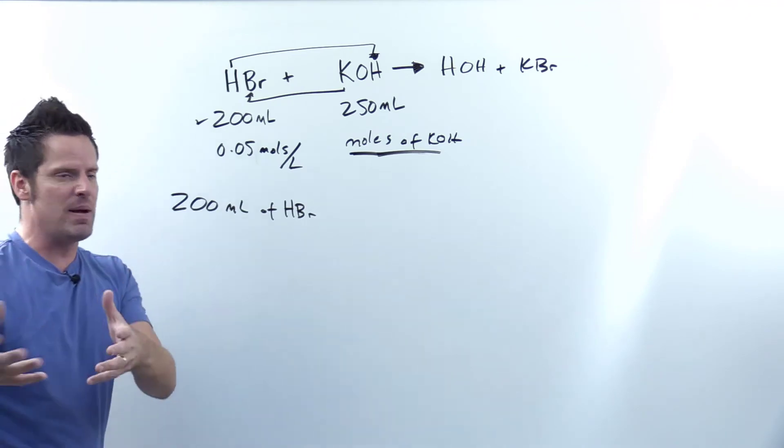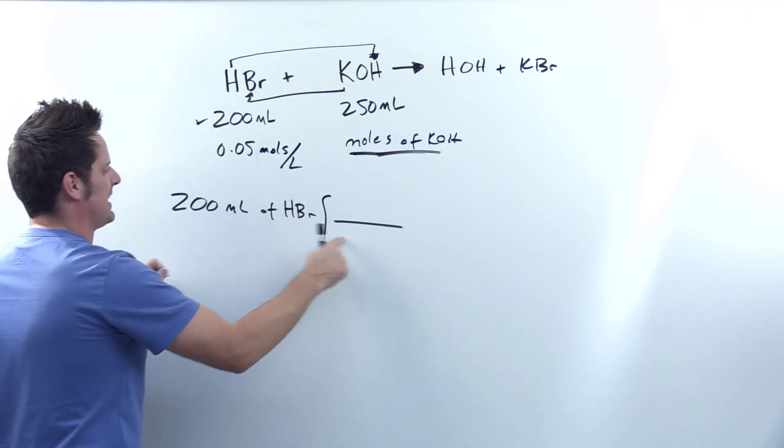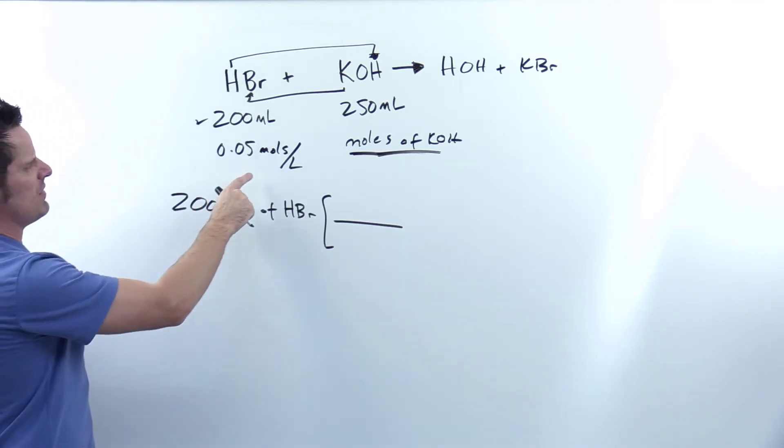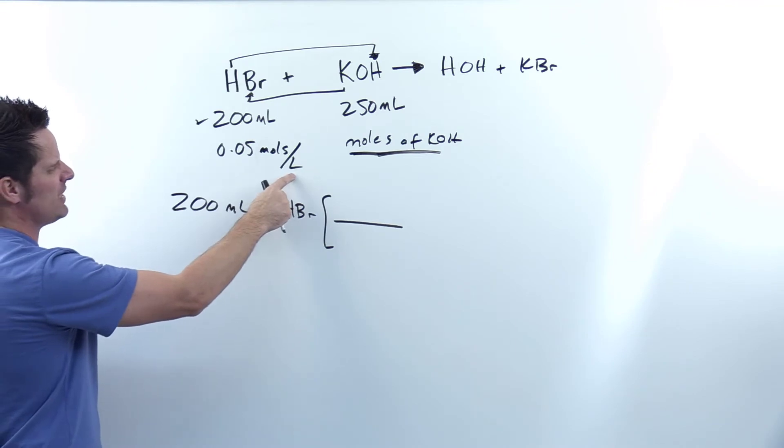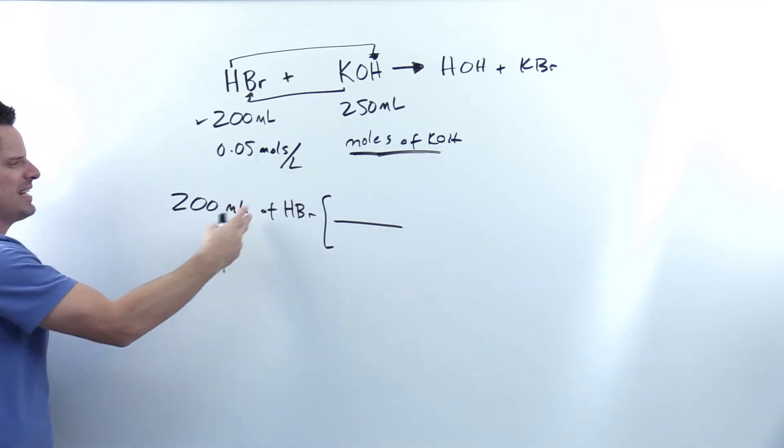Now using the pattern of dimensional analysis slash unit conversion, the units in the denominator here are going to have to be something that cancel units in the numerator of the previous term. Now you'll notice that the other values that I'm given, this molarity here has units of liters in it, not milliliters. So I'm probably going to want to convert this milliliters into liters.